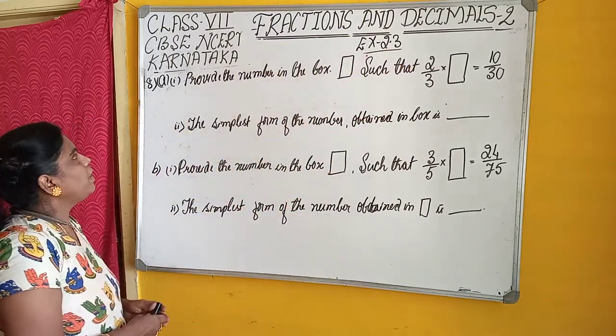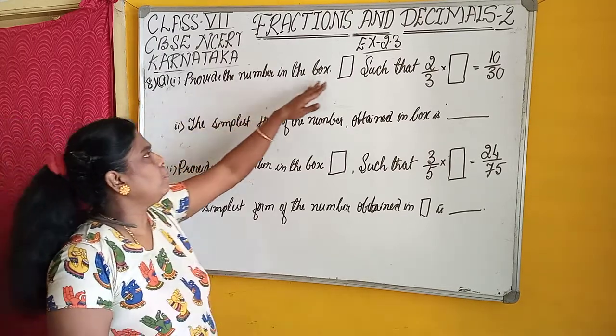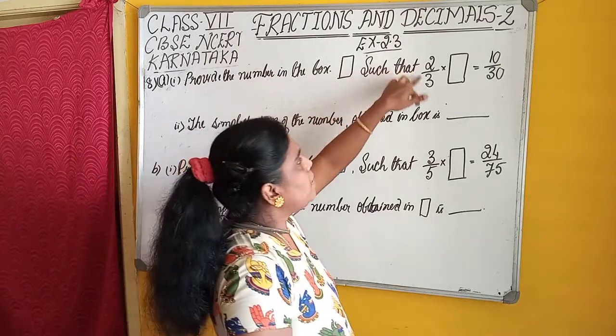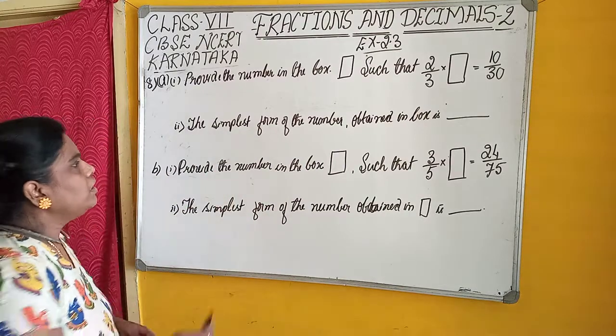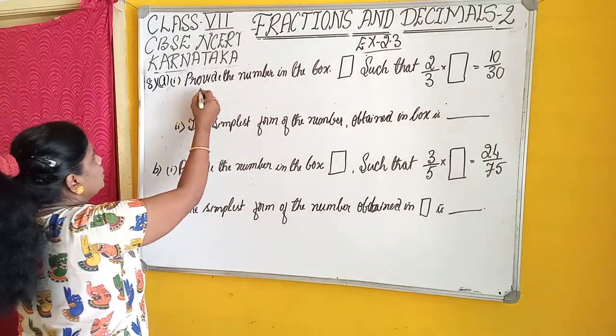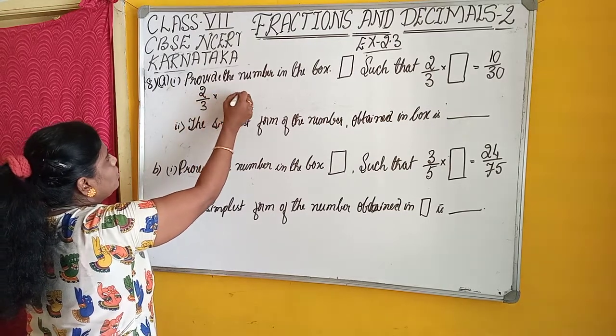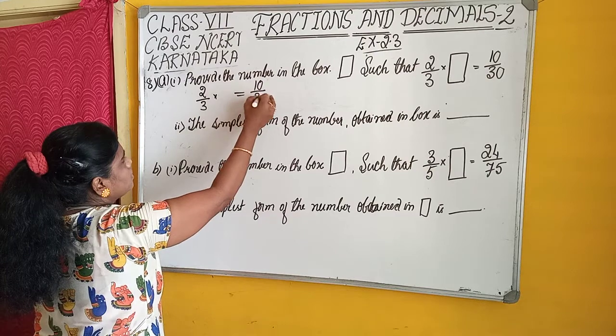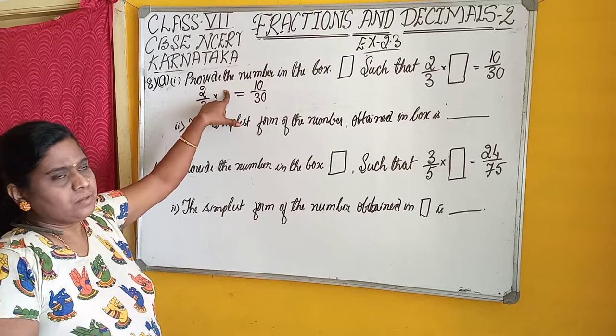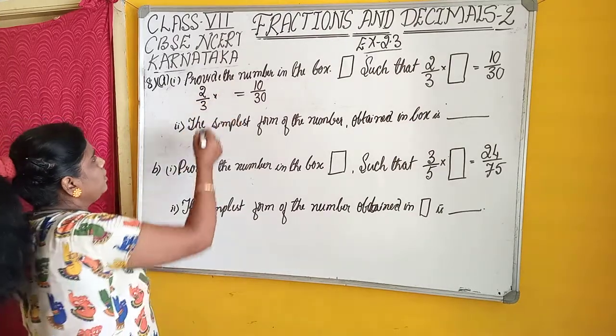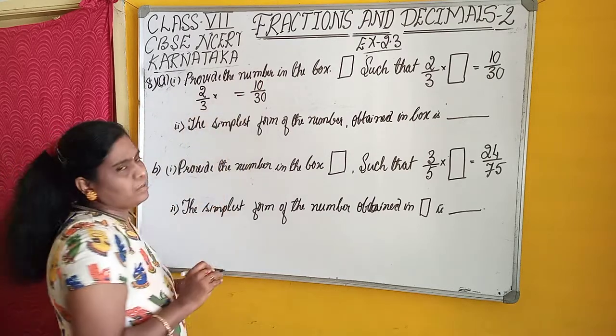In the 8th main A problem, the first one is: provide the number in the box such that 2/3 × □ = 10/30. We have to fill the number in that box. We know that 2 into this number, when we multiply the numerator, we will get this. And when we multiply the denominators, we will get this.